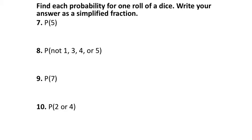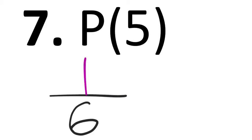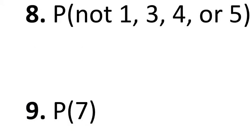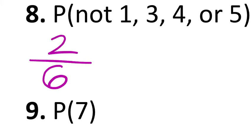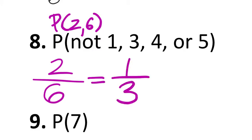Find each probability for one roll of a die — write your answer as a simplified fraction. Since it's theoretical, a standard die has six possible outcomes, so the denominator is six. The probability of rolling a five is 1/6. The probability of not rolling a one, three, four, or five — that leaves two and six — so that's 2/6, which simplifies to 1/3.